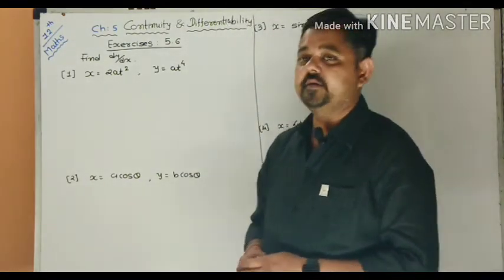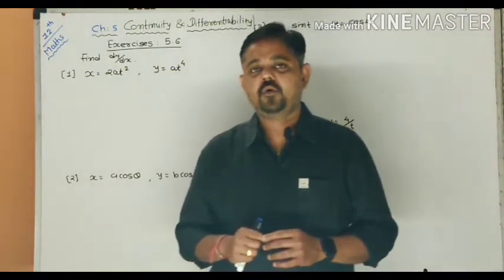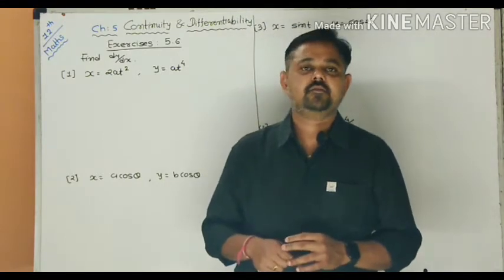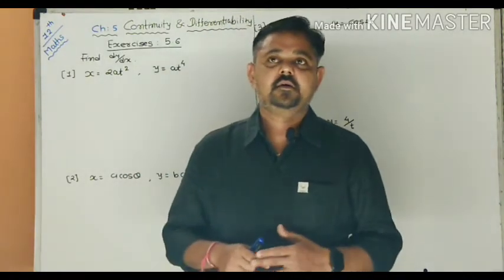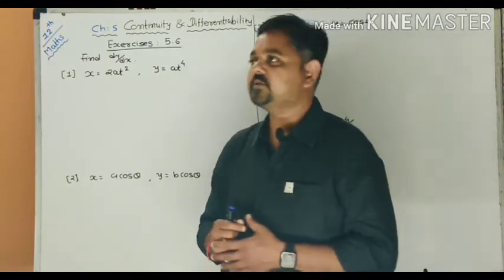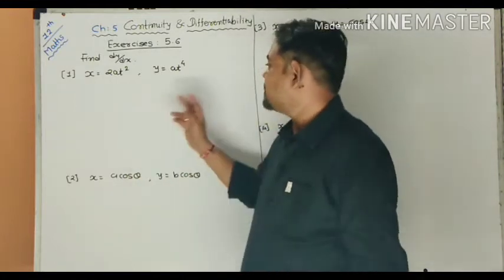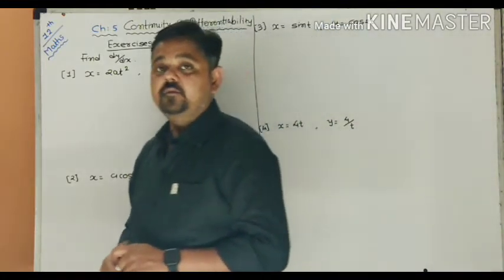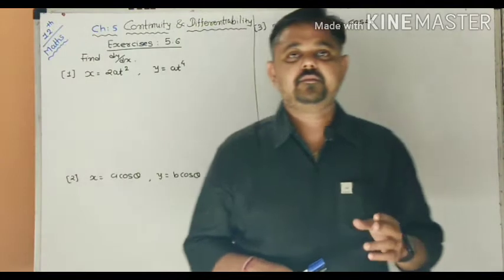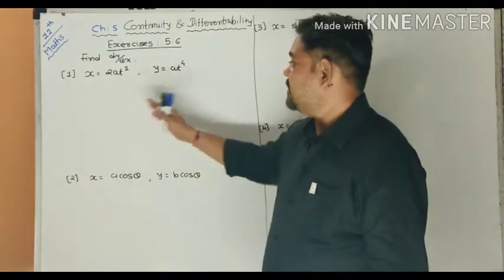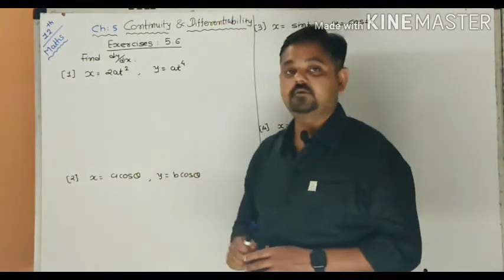Now Exercise 5.6 — the question is to find dy/dx, but you should identify which type of function it is: implicit function or exponential function. Here, the functions are x = 2at² and y = at⁴. This means x is dependent on t and y is dependent on t — that is called a parametric equation. So the functions are in the form of parametric equations.